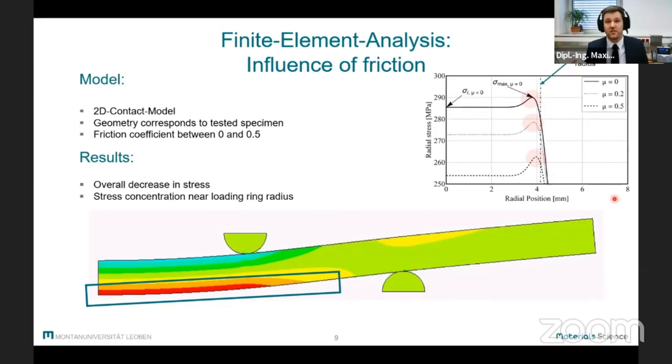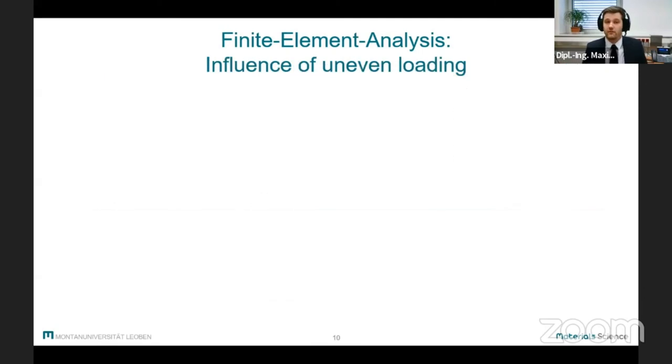So friction could not explain the decrease in strength and we have to look at other explanations. One possible explanation might be uneven loading. Due to the lack of layers, small misalignments and machine inaccuracies between the ring and the specimen might not be compensated, and this could lead to a decrease in strength.